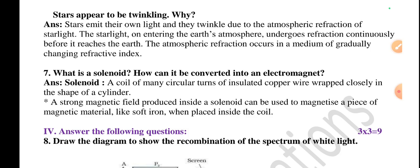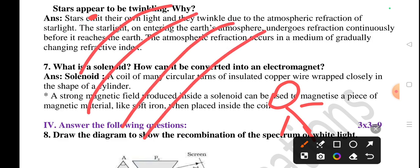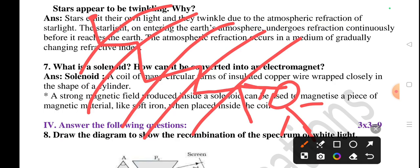Answer: Stars emit their own light and they twinkle due to atmospheric refraction of starlight. The starlight, on entering the earth's atmosphere, undergoes refraction continuously before it reaches the earth. The atmospheric refraction occurs in a medium of gradually changing refractive index. For example, we are here, this is the star like a point or small pin-like structure. This is the earth's atmosphere. From this small dot, whatever light enters towards several layers, it refracts. Whenever it reaches our eyes, the star becomes bright. Whenever it's not reaching our eyes - because the star always emits its own light - whenever the light is not entering our eyes, that time it looks dim or faint. Because of this process, stars appear to be twinkling.